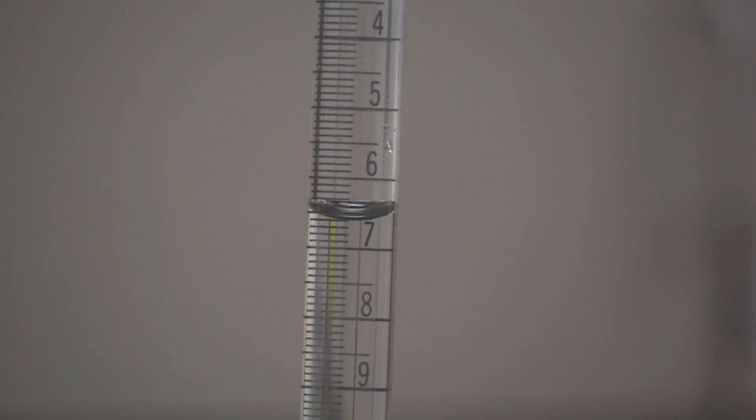Read the volume of sodium hydroxide on the burette and record this amount in your lab notebook. The entire titration should be repeated two more times and then calculate the mean or average volume of the sodium hydroxide solution required to neutralize the hydrochloric acid.